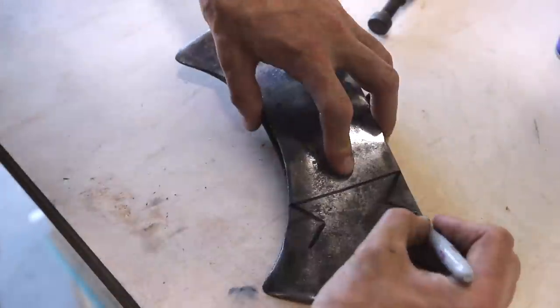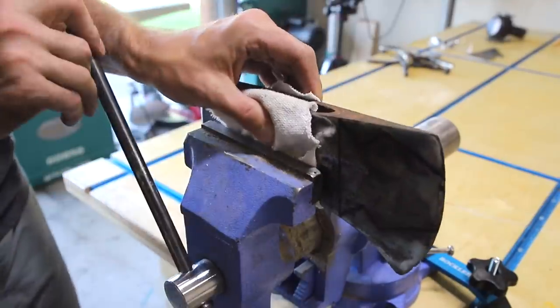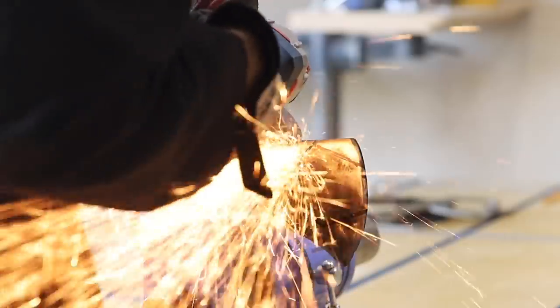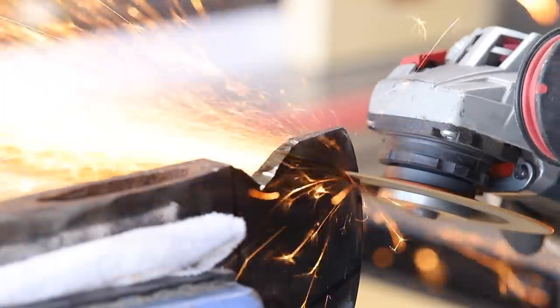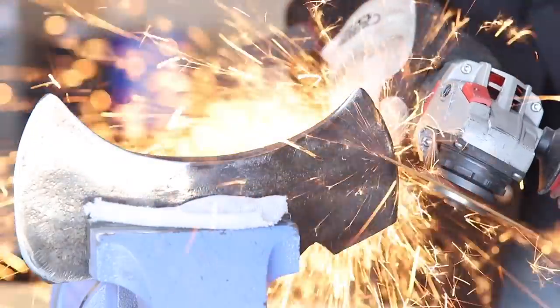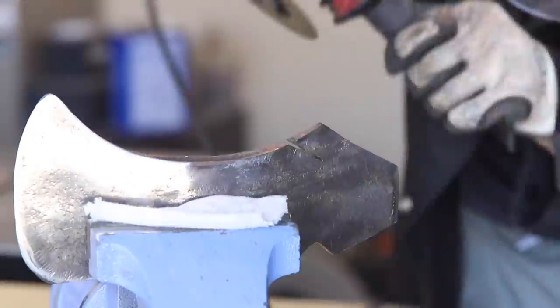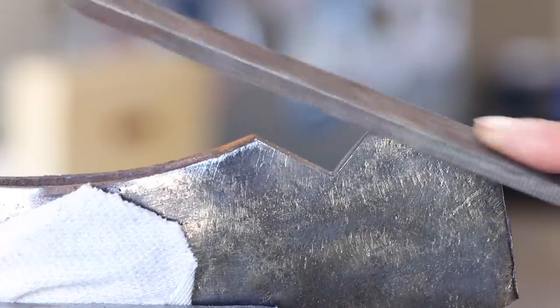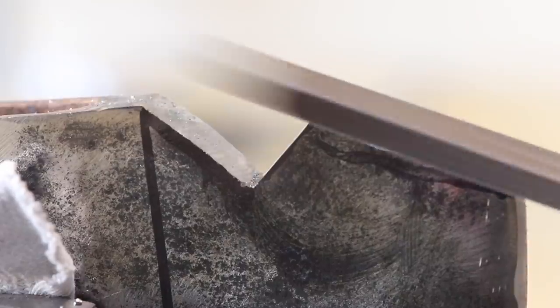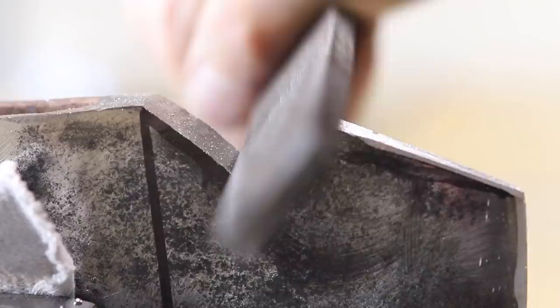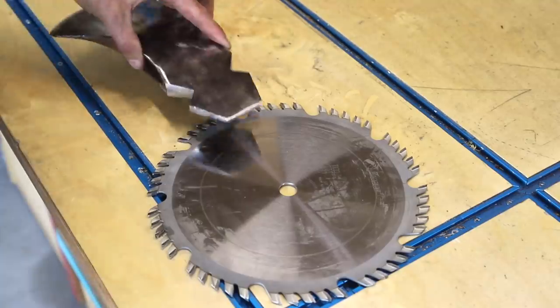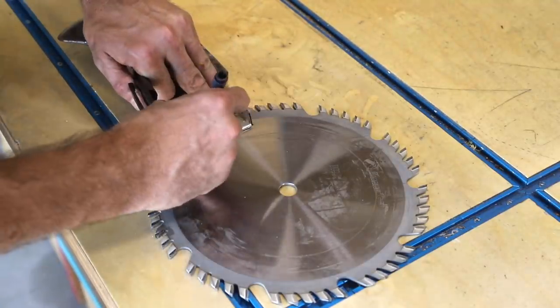With the axe head cleaned up, I sketched out the spike shape on the back of the axe and cut it out with an angle grinder. I'm using this old saw blade to add the remainder of the spike and again I can just cut this out with an angle grinder before welding it onto the axe head.